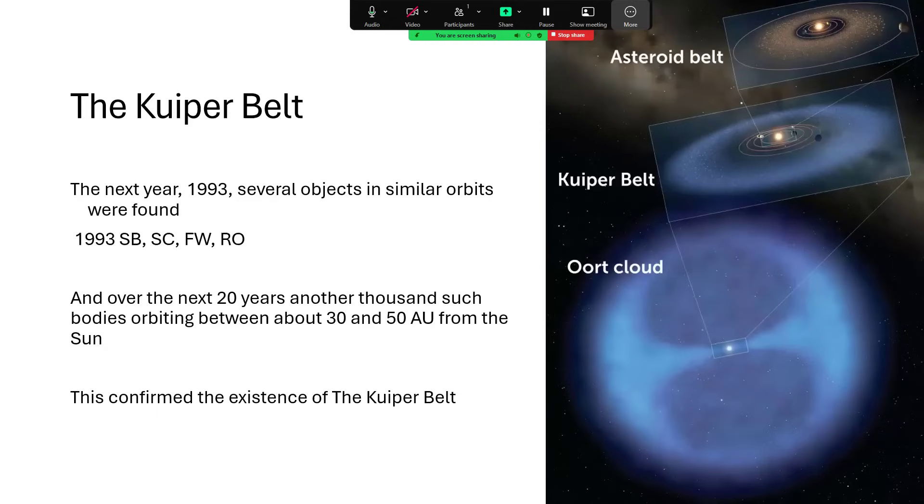But it wasn't very long, because the next year several more objects were found in similar orbits. We have 1993 SB, SC, FW, and RO. And over the next 20 years, another thousand or more objects were discovered in this region between 30 and 50 times the Earth-Sun distance, 30 to 50 AU, and this confirmed the existence of the Kuiper Belt.